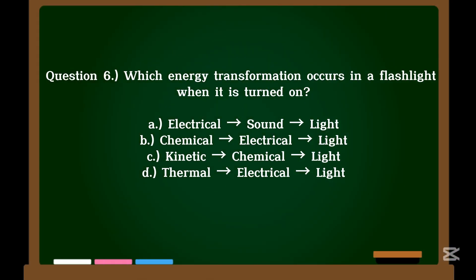Question 6. Which energy transformation occurs in a flashlight when it is turned on? A. Electrical → sound → light. B. Chemical → electrical → light. C. Kinetic → chemical → light. D. Thermal → electrical → light.